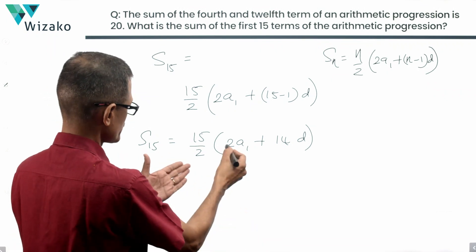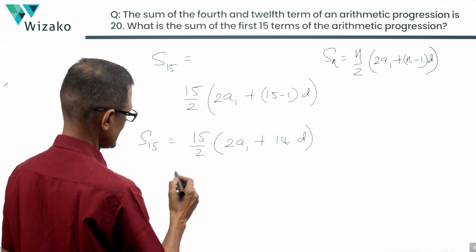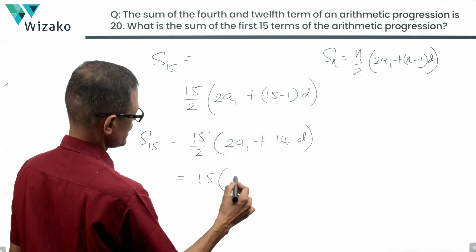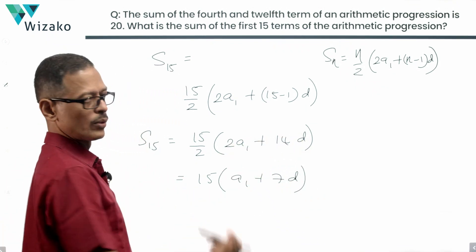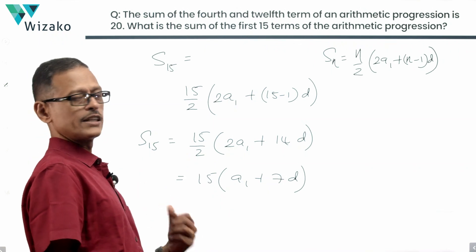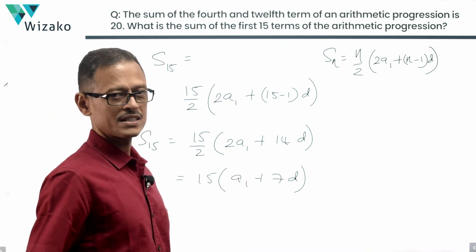Could possibly simplify it because the 2 can be taken common from both, will get cancelled to leave us with 15 into A1 plus 7D. The 2 and 2 from 14 will come out as a 2, will get cancelled with the 2 in the denominator, 15 into A1 plus 7D.